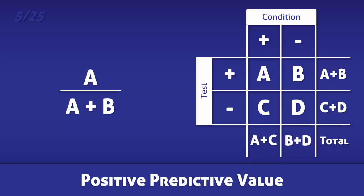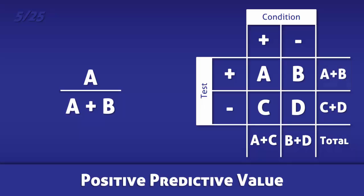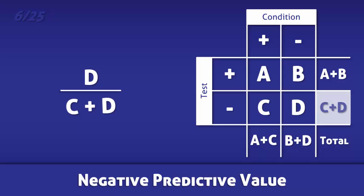For the positive predictive value, divide the number of true positives by the total number of positive tests. For the negative predictive value, divide the number of true negatives by the total number of negative tests.